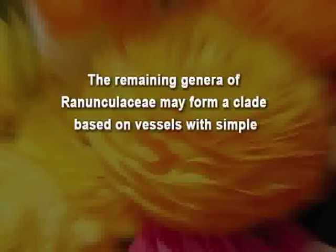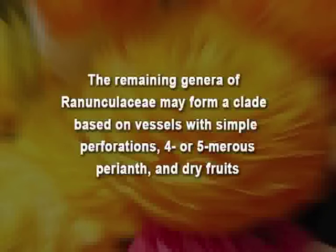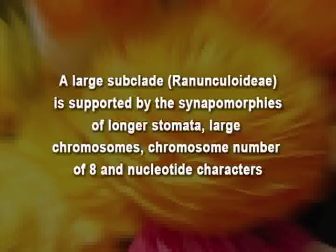The remaining genera of Ranunculaceae are believed to form a separate clade based on characters like their vessels having simple perforations, not being trimerous but tetra- or pentamerous, and having dry fruits rather than fleshy fruits. A large sub-clade named Ranunculoideae is supported by synapomorphies like longer cytomers, larger chromosomes, chromosome number of 8, and nucleotide characters. Furthermore, the reduction in the number of ovules per carpel and the evolution of achenes have occurred several times within the family. Petaloid staminodes have also evolved more than once.